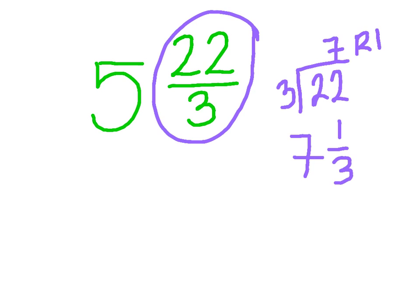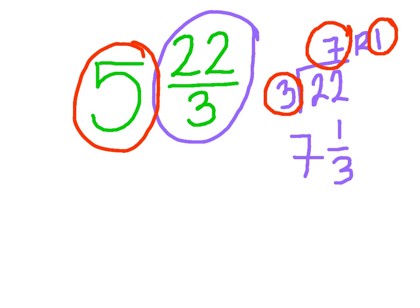You can see that I got the 7 from the answer here, I got the 1 from the remainder, and I got the 3 from the divisor. Now I also need to add the 5, which is the whole number, to this number in order to have a final answer.